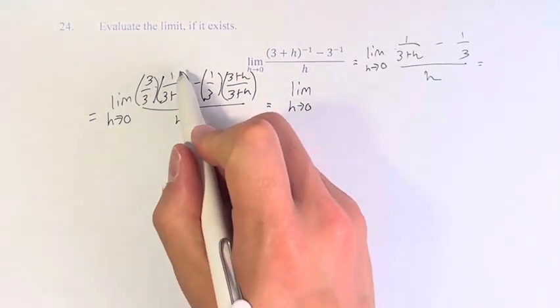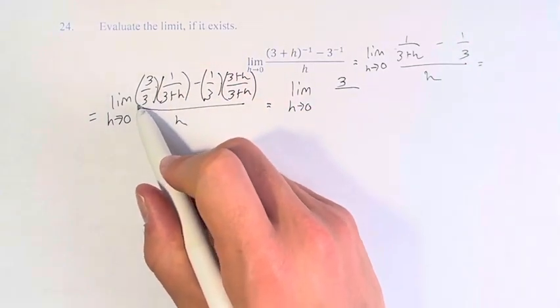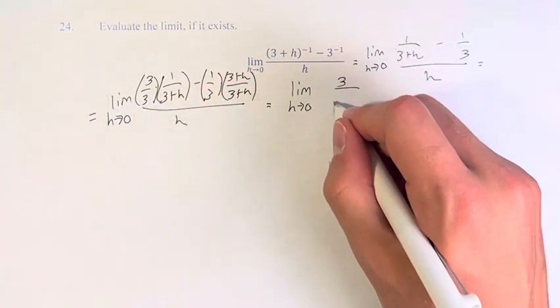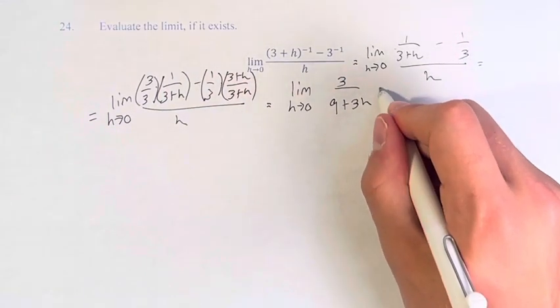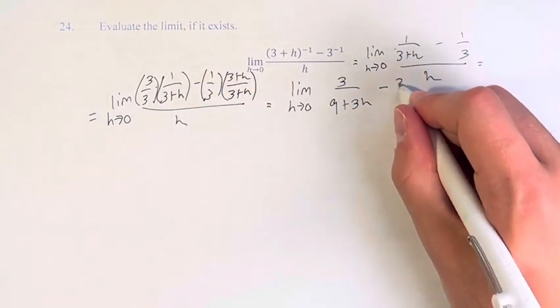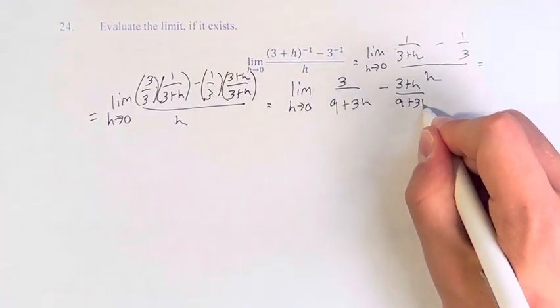This is going to give us 3 times 1 is 3 over 3 times 3 is 9, 3 times h is 3h, minus 3 plus h over 9 plus 3h.